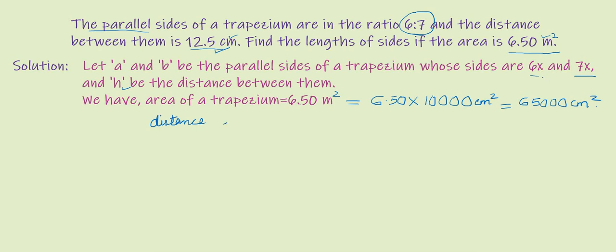We know the area of trapezium formula. The area of a trapezium is equal to half multiplied by (a plus b) into the distance between the parallel sides. So half into sum of parallel sides multiplied by the distance between the parallel sides.